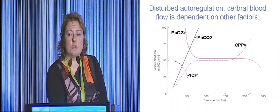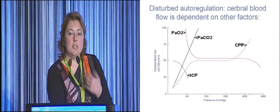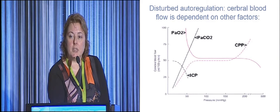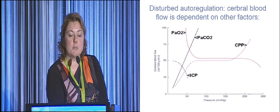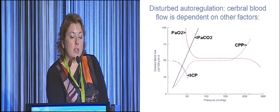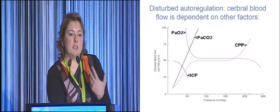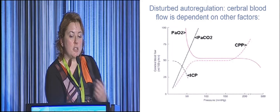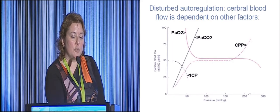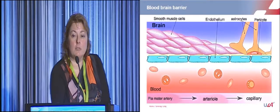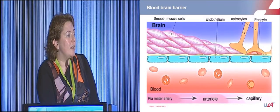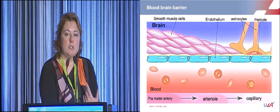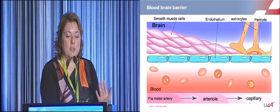We also have autoregulation of the brain, where cerebral blood flow is stable within certain borders of mean arterial pressure. But when the brain is damaged, this autoregulation gets disturbed and cerebral blood flow becomes dependent on other factors like PO2 and PCO2. So basics — ABC management — are important for a good outcome. Then there is the blood-brain barrier, which makes it difficult to determine whether medication reaches the brain.